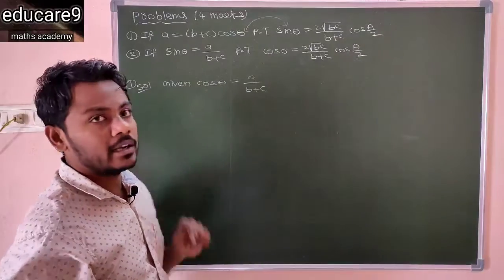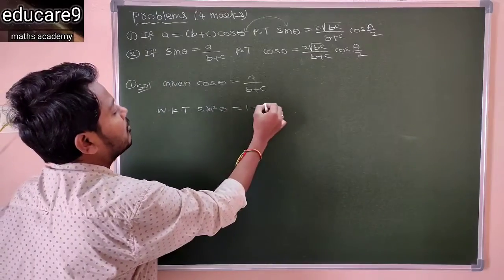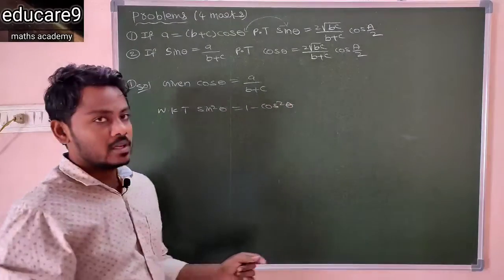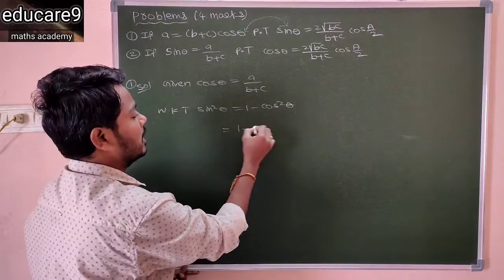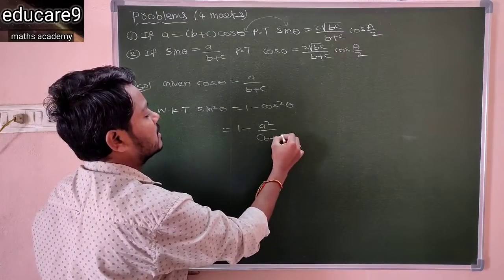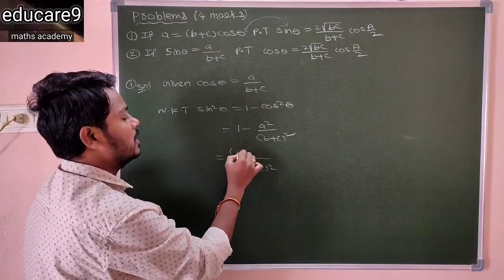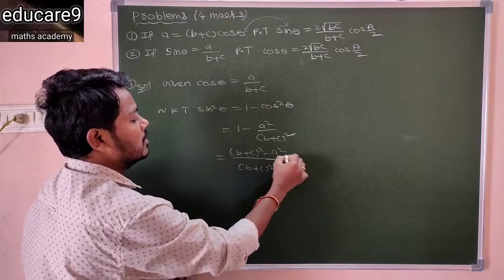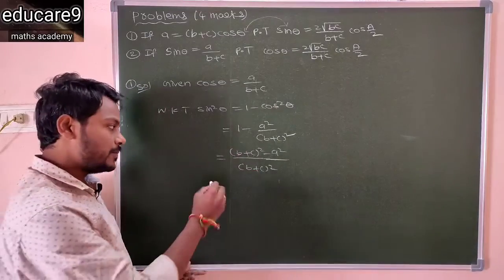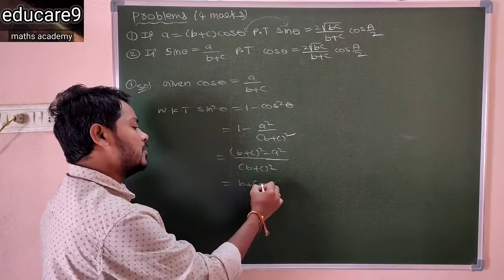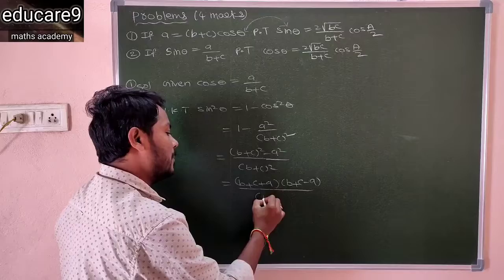You need to find sin θ. You know that sin²θ equals 1 minus cos²θ. So cos θ value is a/(b+c). Substituting: this is 1 minus a²/(b+c)². So the LCM is (b+c)². You have (b+c)² minus a² in the numerator.